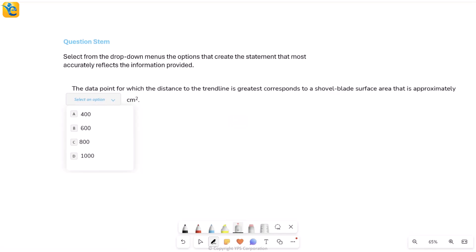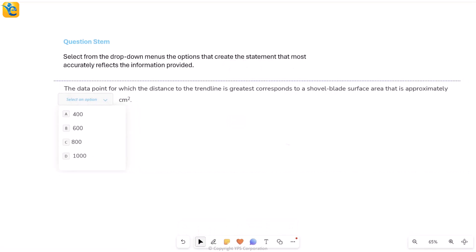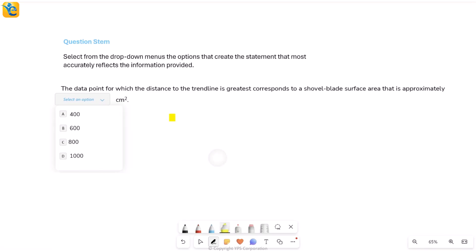There are two statements we have to fill with choices. The first talks about the data point for which distance to the trend line is the greatest, and asks about the surface area of the shovel blade for this data point.